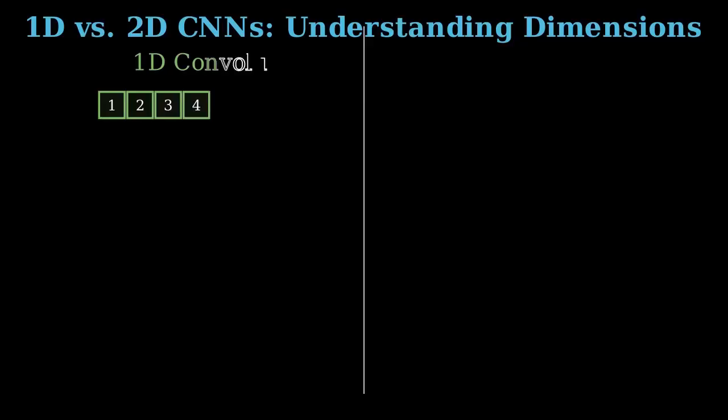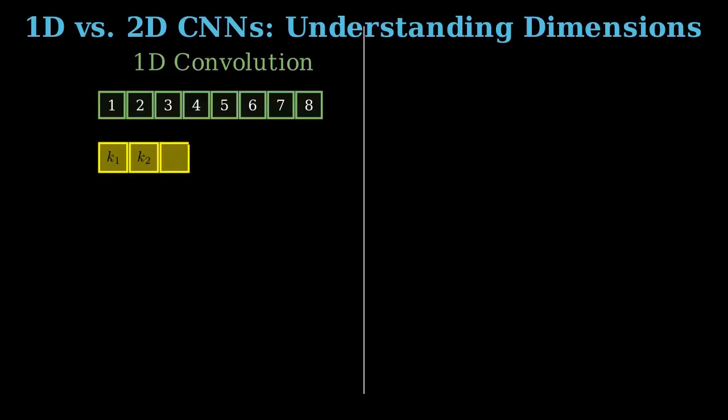When we talk about convolutional neural networks, the dimension, either 1D or 2D, refers to the shape of the input data and the way the kernel operates. On the left, we have the 1D convolution. The input data is a sequential array like a time series, audio signal, or a sentence. The 1D kernel is also a linear sequence of weights. As you can see, the kernel only slides along one axis, the length of the sequence, to produce a one-dimensional feature map. This output feature map is still a sequence, just a shorter one capturing temporal features.